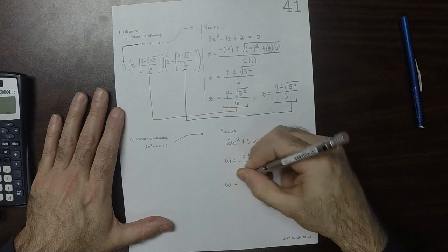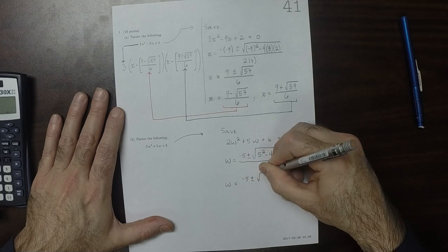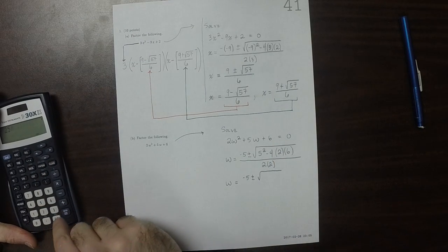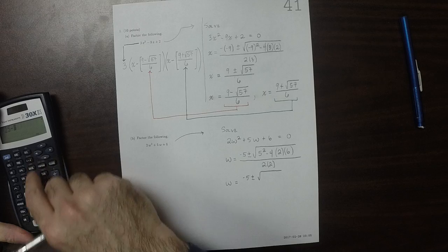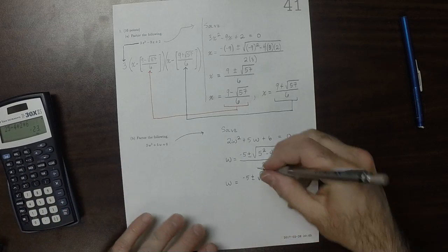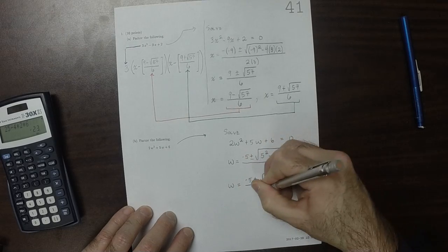So w is negative 5 plus or minus the square root of... well, how much is in the radical? So that would be 25 minus 4 times 2 times 6, would be negative 23 over 4.